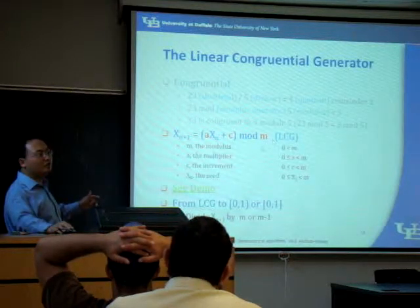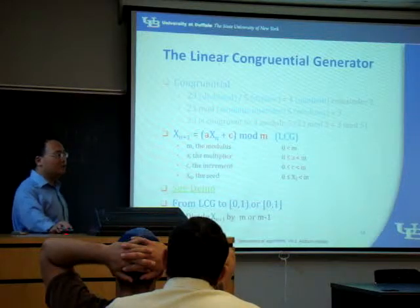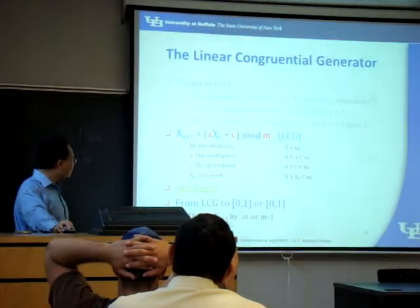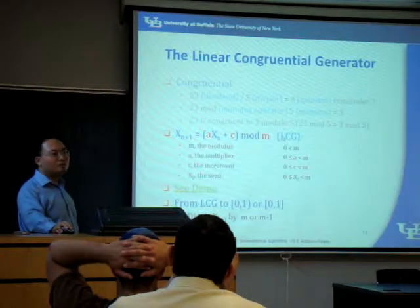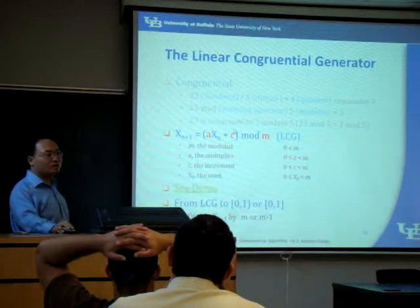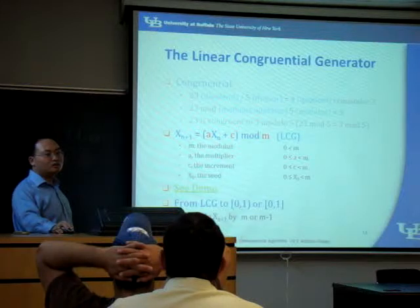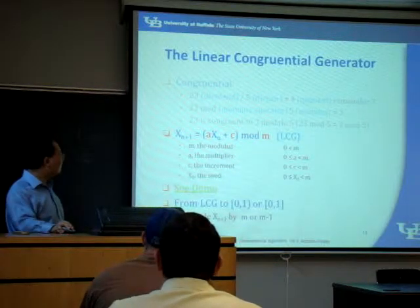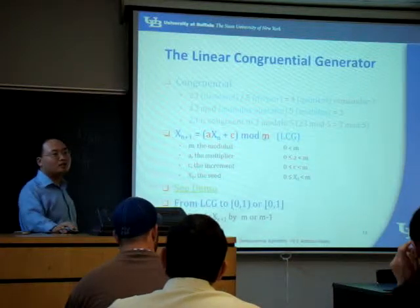By dividing this by m, or m minus 1, it depends on if you want to get 1 or not. The m will be less than x_n plus 1 because you are calculating the modulus — anything more than m will not be bigger than m. For example, 3 mod 5 equals 3. So anything more than m would not be greater than m. The maximum value is m minus 1, otherwise it will not be a modulus.